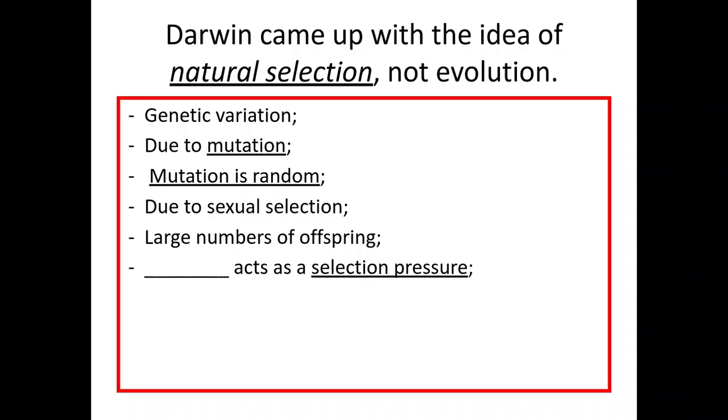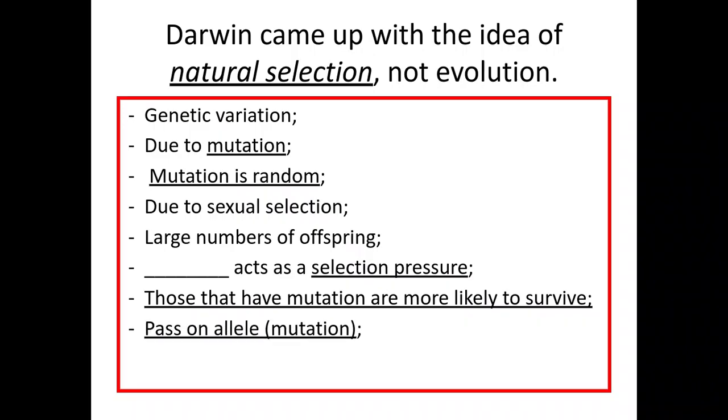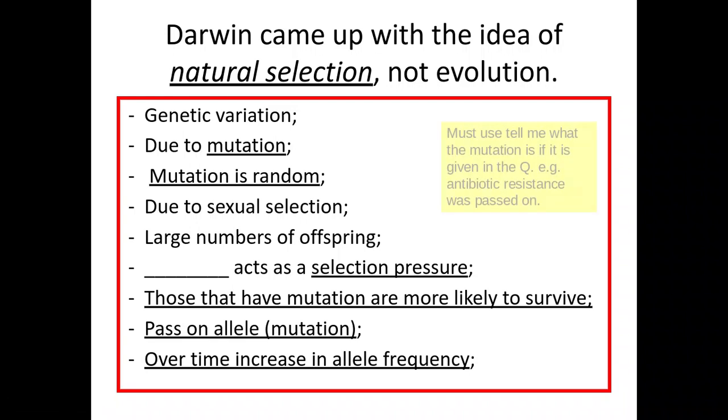You basically have to just put in here whatever is in the question. Now those that are most likely to have that mutation are more likely to survive and pass on these alleles to future generations. Again, it's important here that we insert what the mutation is of this particular allele, and we also need to put in that these alleles will increase in frequency over time.